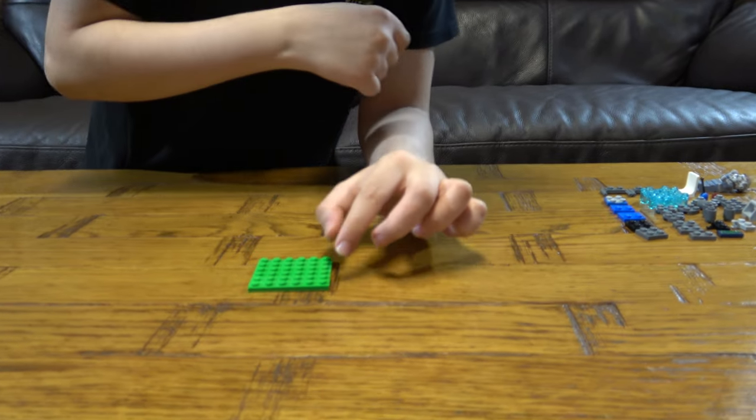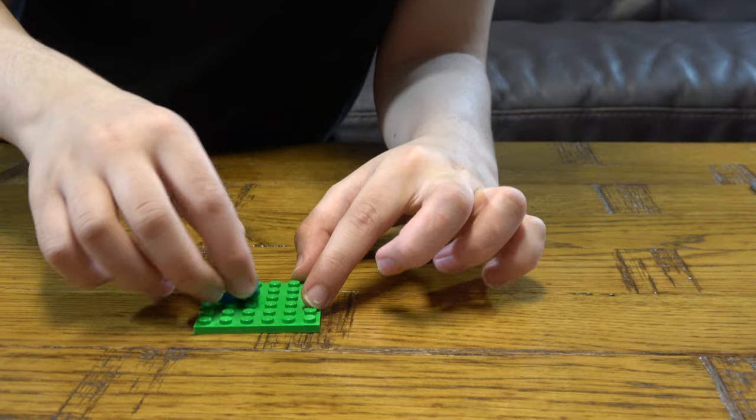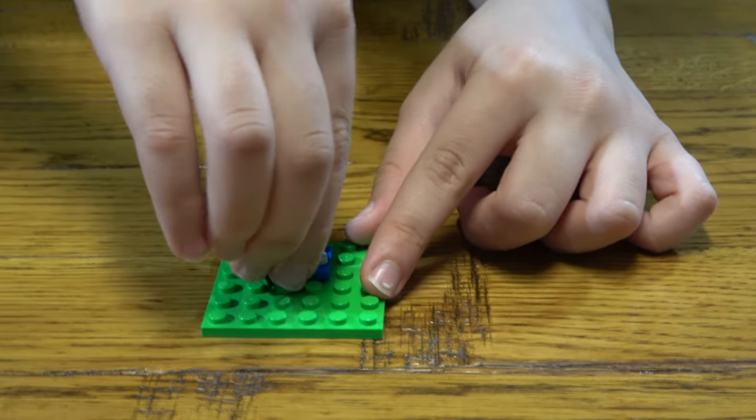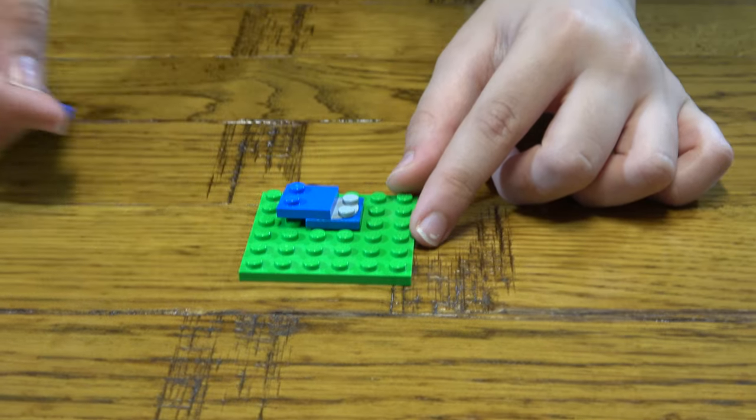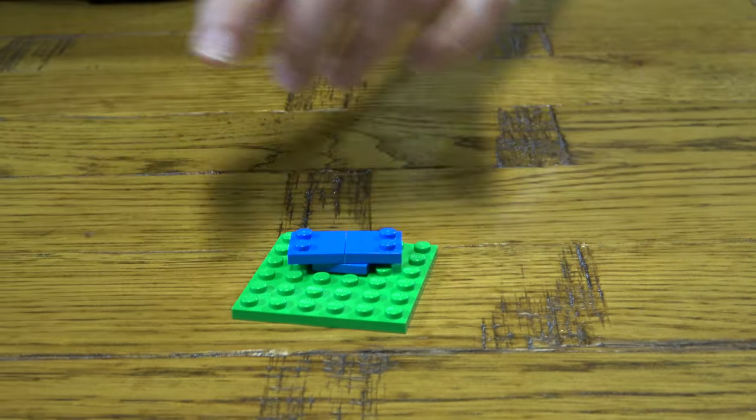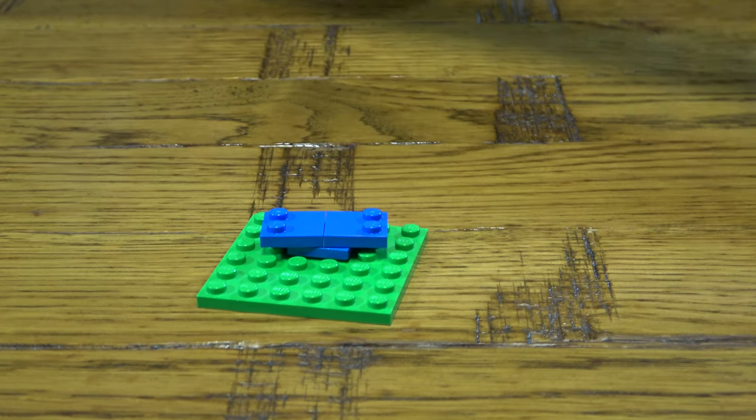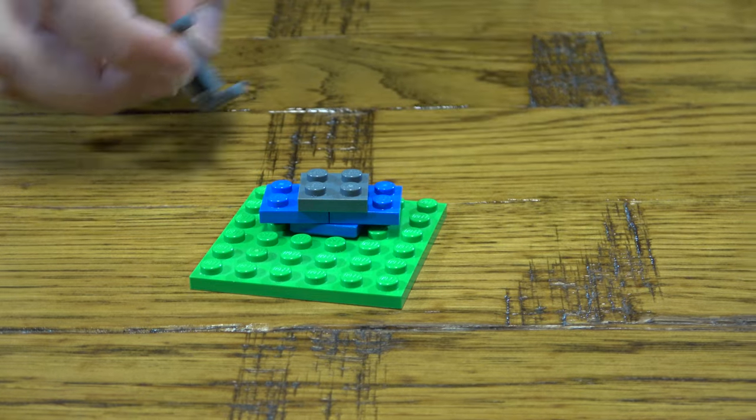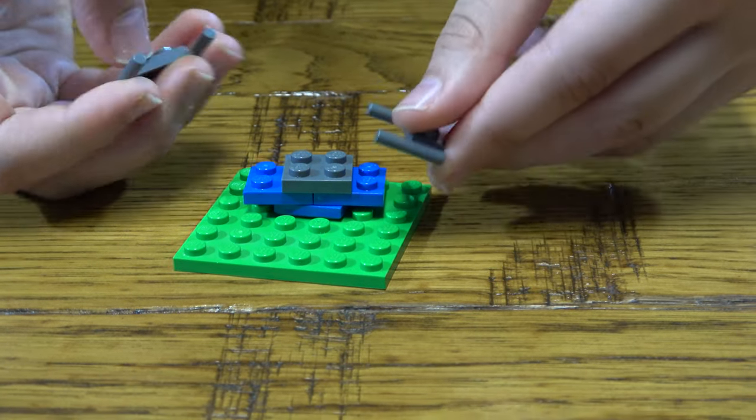First thing you need to do is get this and place this here. Place two of these on there like so. Then next you just place that there. Get two of these.